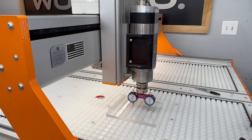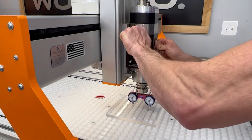We can now begin tramming our machine. The first step is to slightly lower your Z axis and apply pressure onto the indicators.